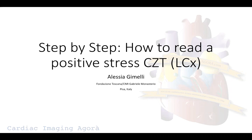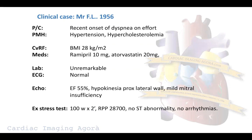This new session is dedicated to how to read the positive stress myocardial perfusion scan, including some different tips. We have a man of 64 years old who arrived at our attention for the recent onset of dyspnea on effort. He has hypertension and hypercholesterolemia. His body mass index is 28. He is treated with ramipril and atorvastatin. Nothing remarkable at the biohumoral markers and the ECG is normal.